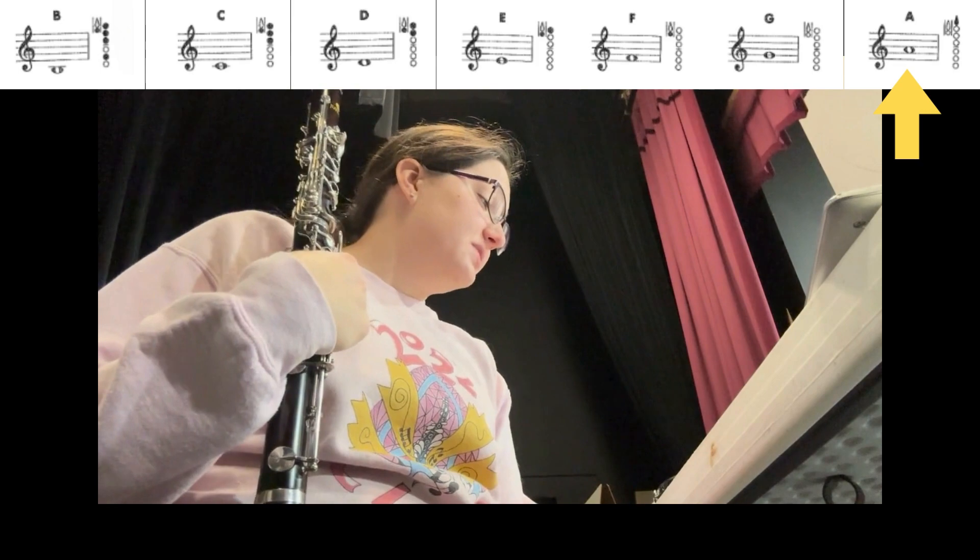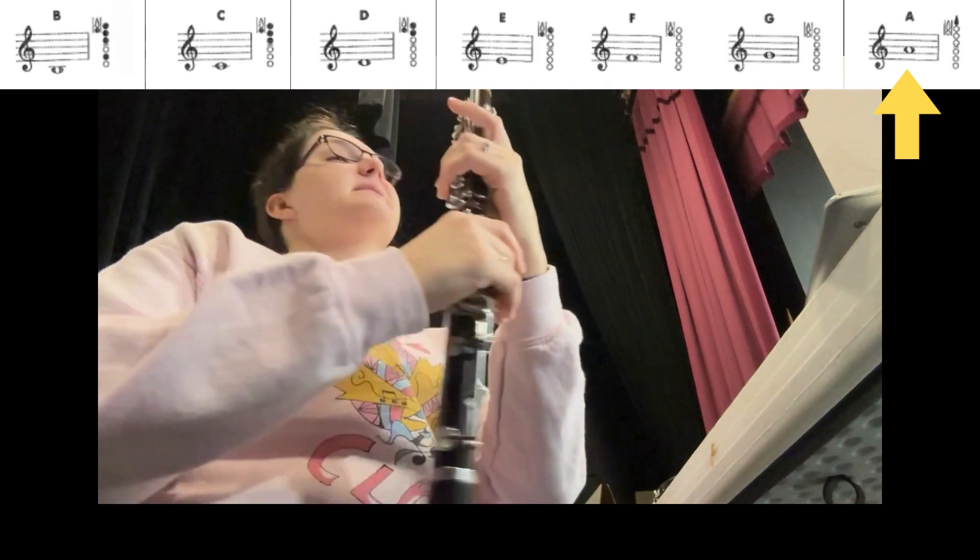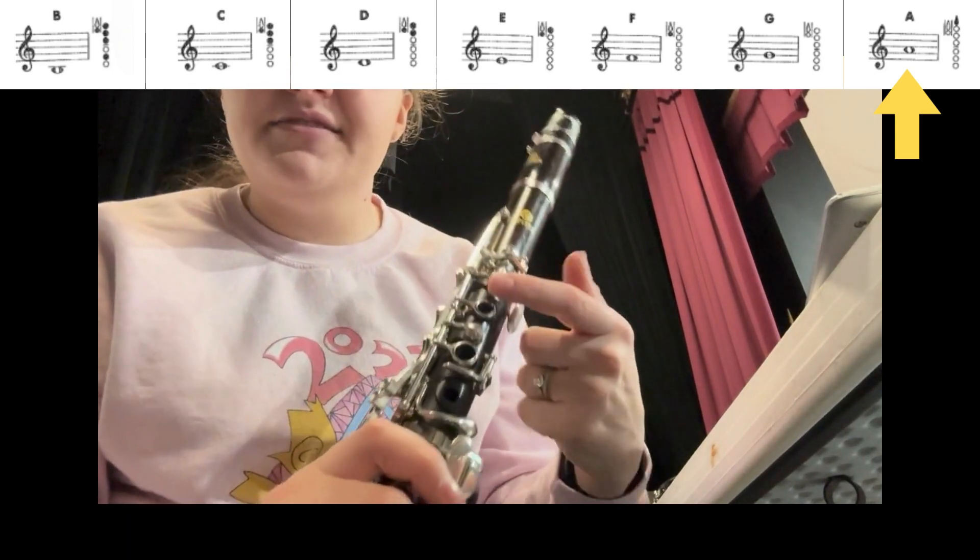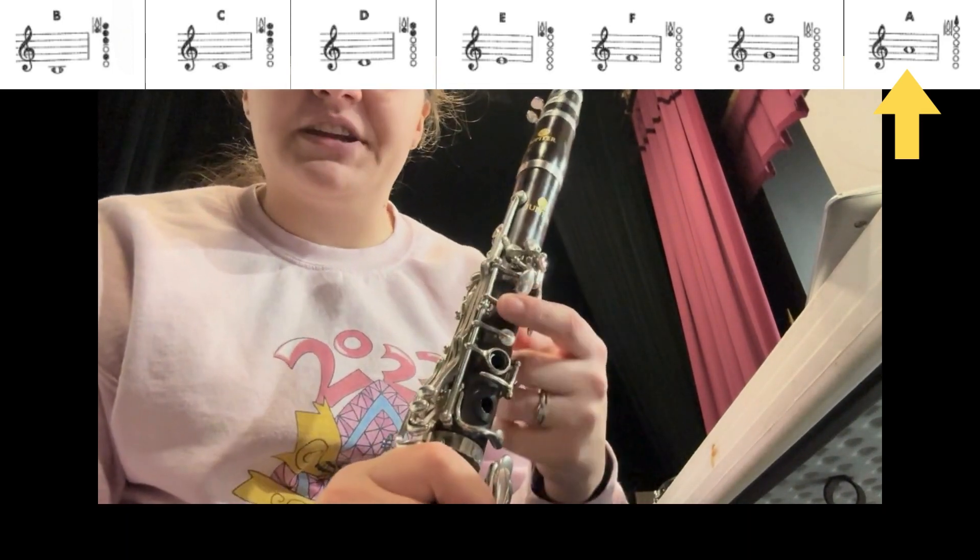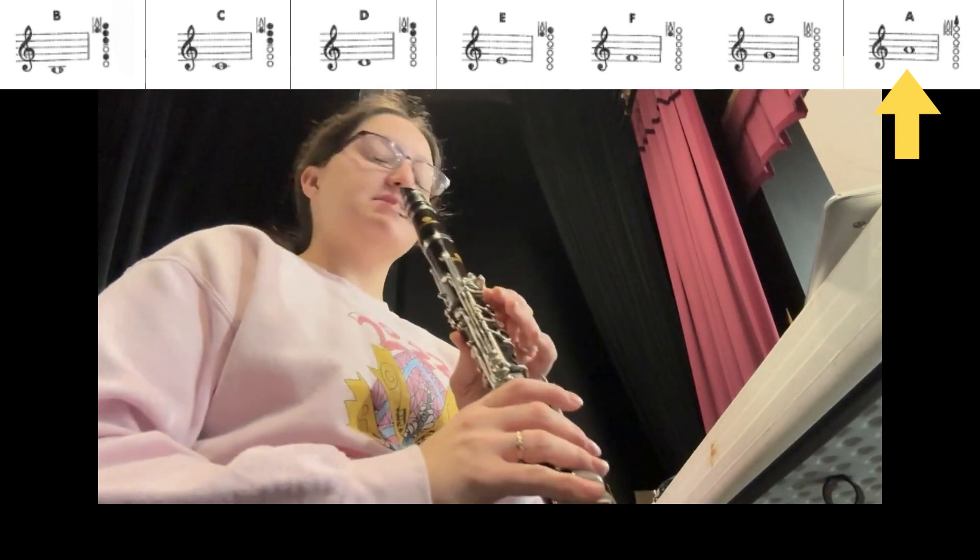Our first note is going to be second space A. Second space A is our top note that we're going to play for this piece, and it is going to be that teardrop with our first finger. We're just going to kind of roll up our first finger and hit the teardrop, and it's going to sound like this.